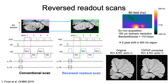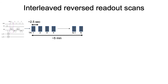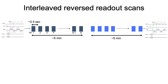On the left are the images before distortion correction and on the right after top-up correction. We can acquire one scan with the normal readout kernel and then a second scan with the reverse polarity readout kernel.